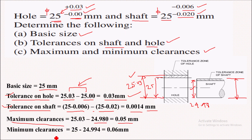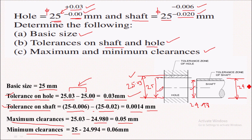For minimum clearance, we take the minimum size of the hole and the maximum size of the shaft. The minimum size of the hole is 25 mm and the maximum size of the shaft is 25 minus 0.006, that is 24.994 mm. So the minimum clearance is 0.006 mm.